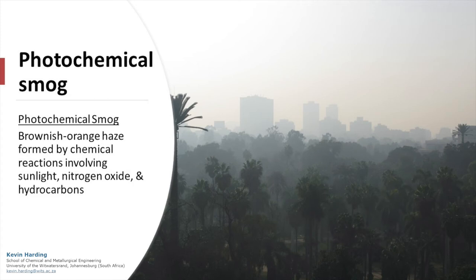Photochemical smog is a brownish-orange haze formed by various chemical reactions. Nitric oxide, carbon dioxide and other hydrocarbons react in the atmosphere and result in ozone, formaldehyde and nitric acid, all of which form photochemical smog.